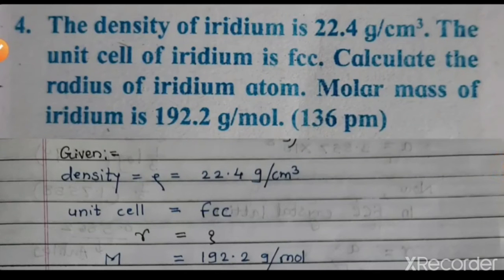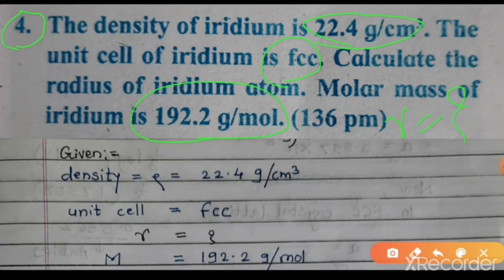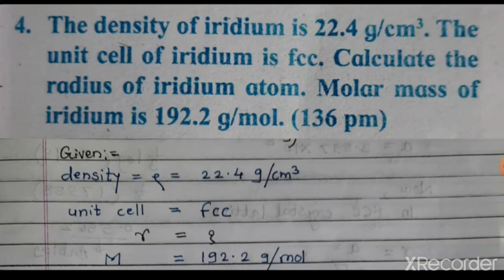Next, numerical number 4: The density of iridium is 22.4 g/cm³. The unit cell of iridium is FCC. Calculate the radius of the iridium atom. Molar mass of iridium is 192.2 g/mol. The answer given is 136 pm. First, let us see what is given.